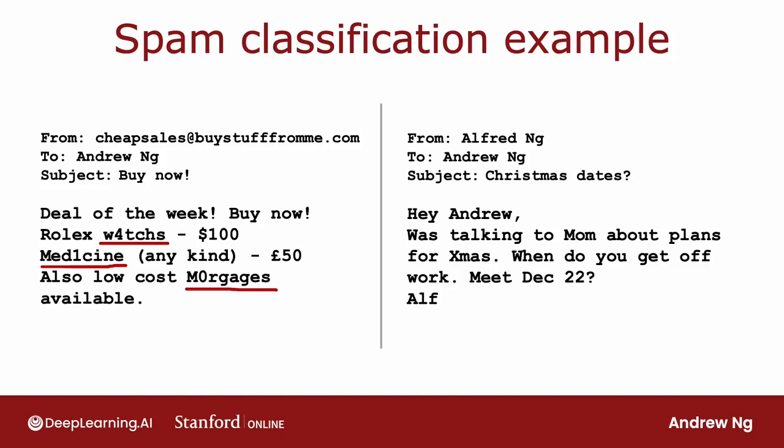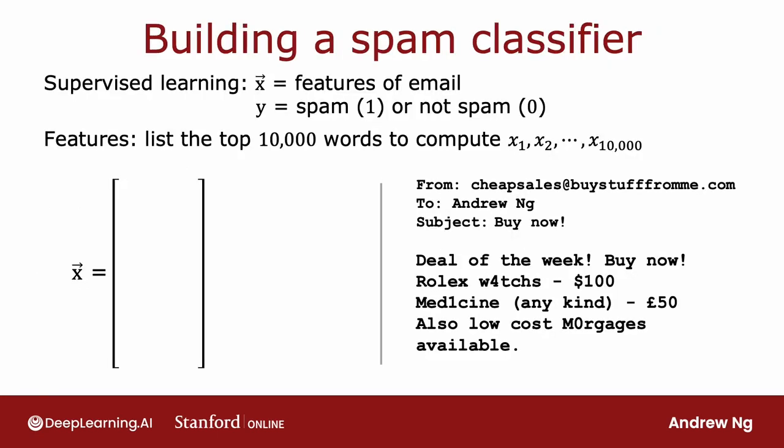In contrast, this email on the right is an actual email I once got from my younger brother Alfred about getting together for Christmas. So how do you build a classifier to recognize spam versus non-spam emails? One way to do so would be to train a supervised learning algorithm where the input features x will be the features of an email, and the output label y will be 1 or 0 depending on whether it's spam or not spam.